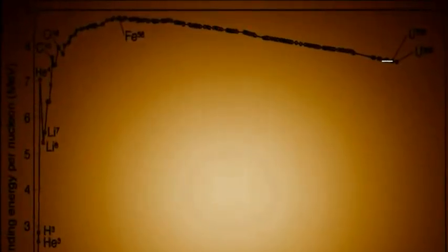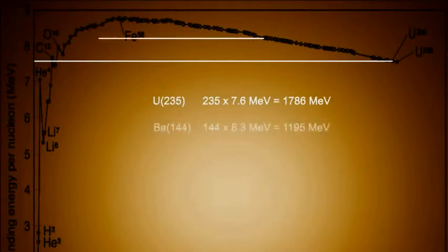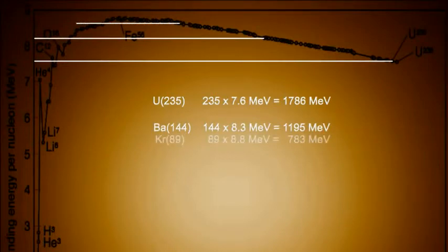Now let's consider what this means from an energy perspective. According to the binding energy chart, uranium has 7.6 MeV of binding energy for each nucleon, for a total of 1786 MeV, while barium-144 has 8.3 and krypton-89 has 8.8, and the extra neutrons have no binding energy.